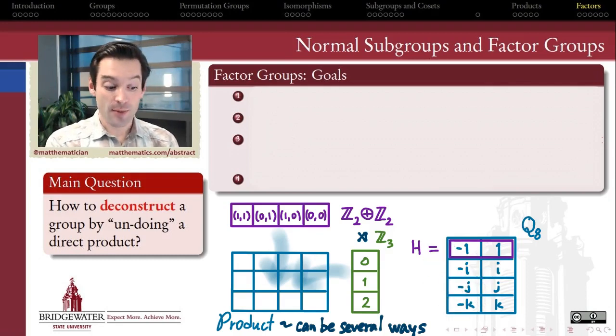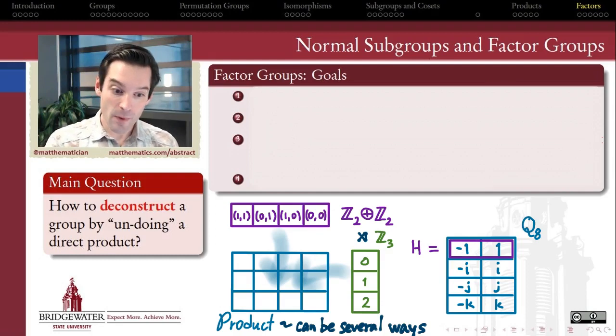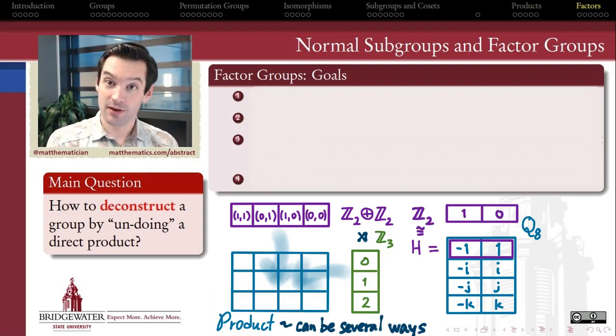And if I take a look at the subgroup, which consists of the real numbers 1 and minus 1 inside of this group, then the question I want to ask is, in what way is the larger group built atop the smaller subgroup? The smaller subgroup here being isomorphic to Z2.